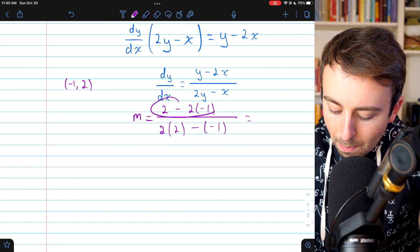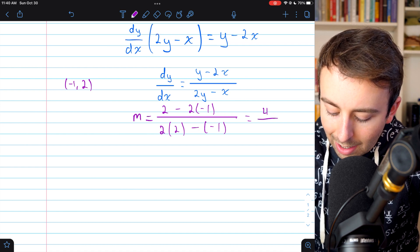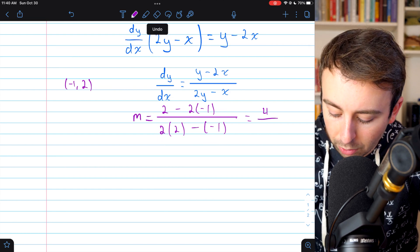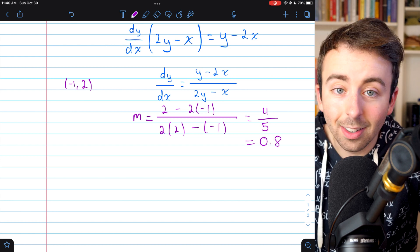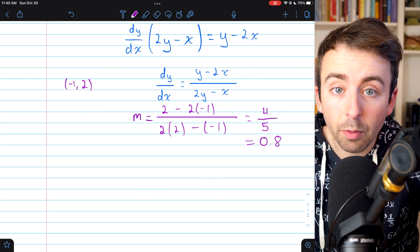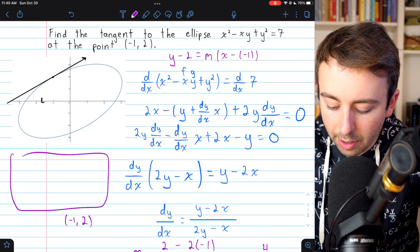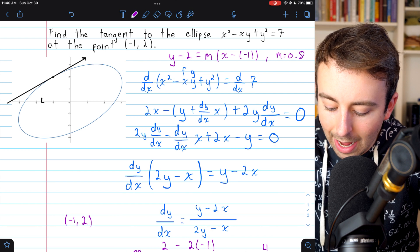This is 2 + 2 in the numerator, which is 4, divided by 2 times 2 plus 1, or 4 plus 1, or 5 in the denominator. And we could just rewrite that as 0.8. Now we can finish writing the equation for the tangent. Let's finish our work over in this corner. We just figured out that m is equal to 0.8.